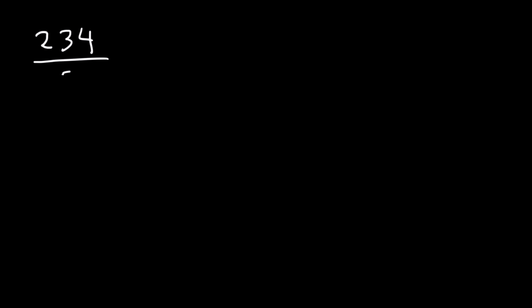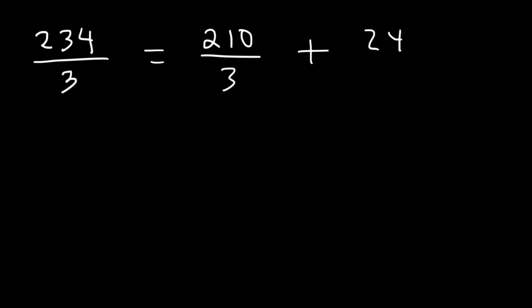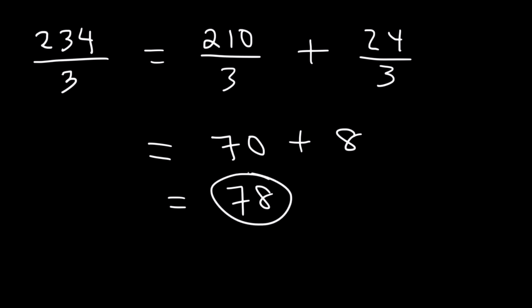Let's work on more practice examples. 234 divided by 3. You don't want to use 200 since it's not a multiple of 3. Instead, break 234 into 210 and 24 — both divisible by 3. 21 divided by 3 is 7, so 210 divided by 3 is 70. 24 divided by 3 is 8. 70 plus 8 equals 78.